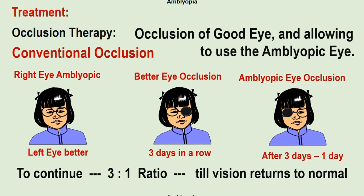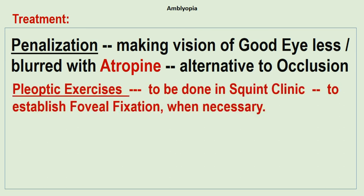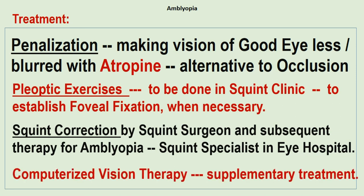Penalization: Sometimes it may be difficult for the child to continue occlusion. In such cases, penalization is done — the idea is to make the vision of the good eye less or blurred using atropine, as an alternative to occlusion. Pleoptic exercises are to be done in the squint clinic to establish foveal fixation when necessary. Squint correction or surgery to correct squint by a squint surgeon, and subsequent therapy for amblyopia, is to be done when required — for this it is necessary to consult a squint specialist at an eye hospital. Computerized vision therapy may also be done as a supplementary treatment.